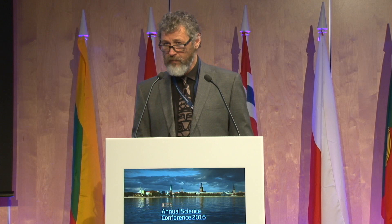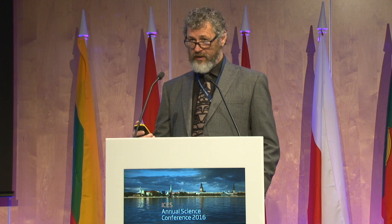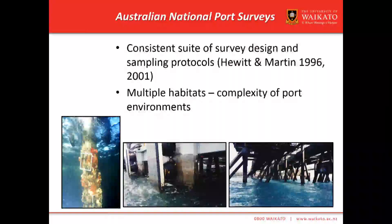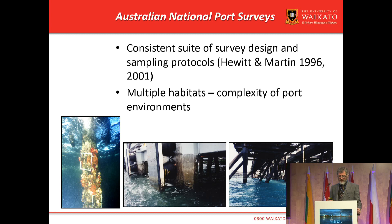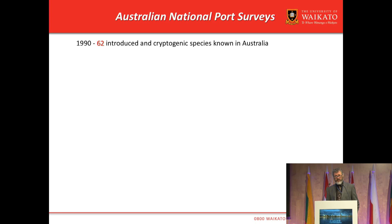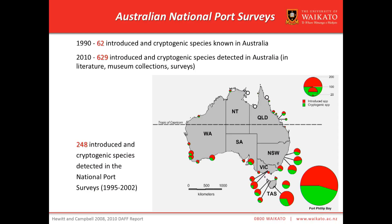In Australia, we were concerned about the scale and scope of invasion, so we undertook a suite of port surveys — interesting environments to dive in, interesting visibility. We designed a suite of sampling protocols and undertook the evaluation. Before I arrived in Australia, we knew there were 62 species — the recognized ones that had been acknowledged and identified. By the time we finished the port surveys, we knew there were 629 species; 248 of those were novel identifications through the port survey program. There's a significant latitudinal gradient — tropical systems having very few invasions, temperate systems having a significant number — and Port Phillip Bay has a very large number because of the longevity of its trading history.